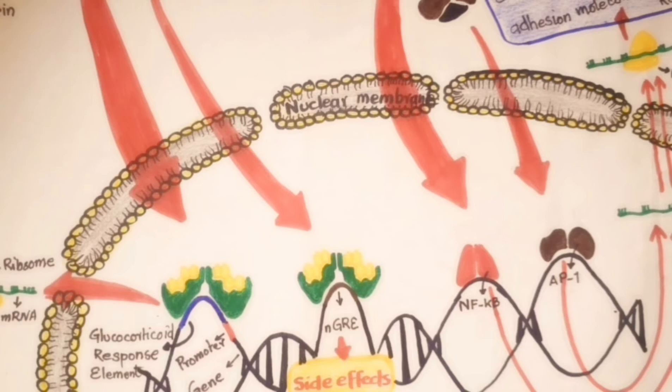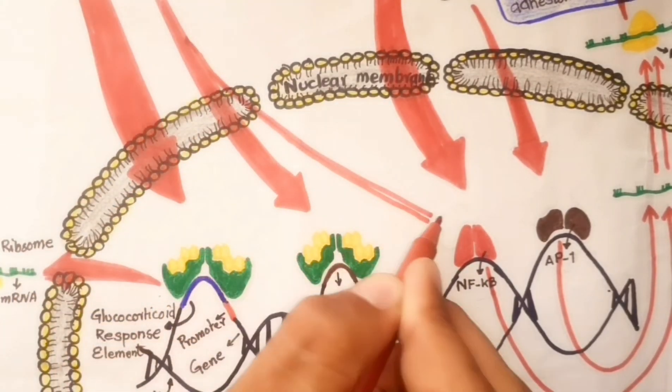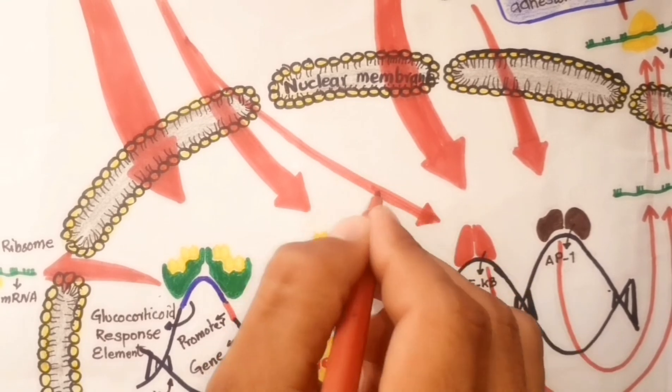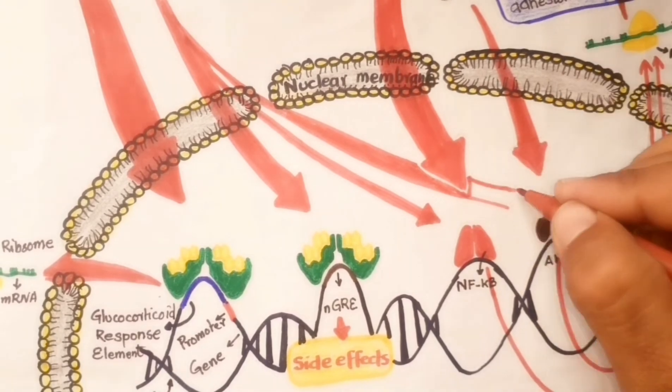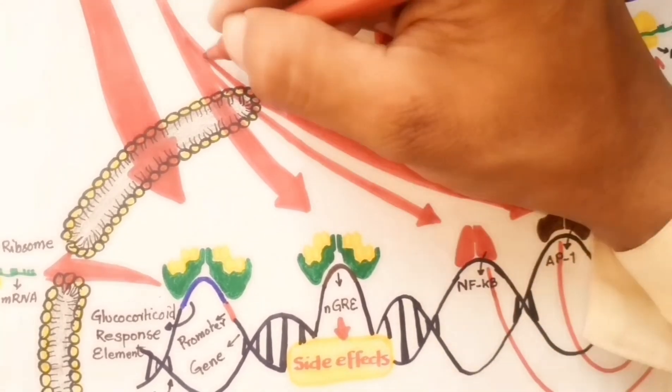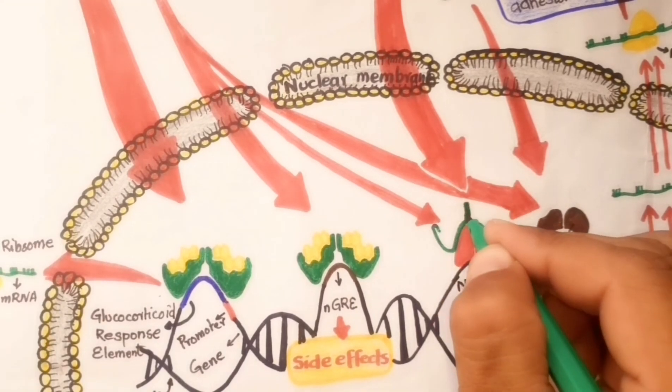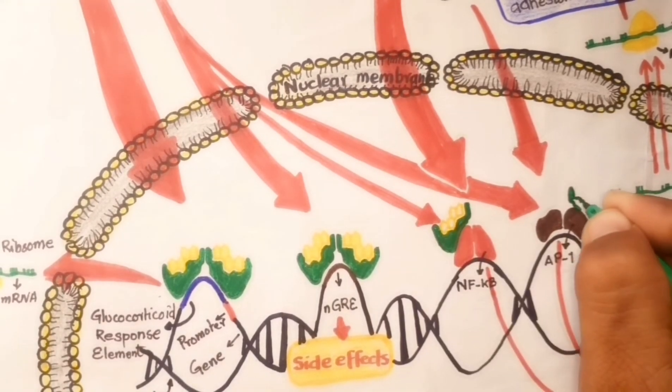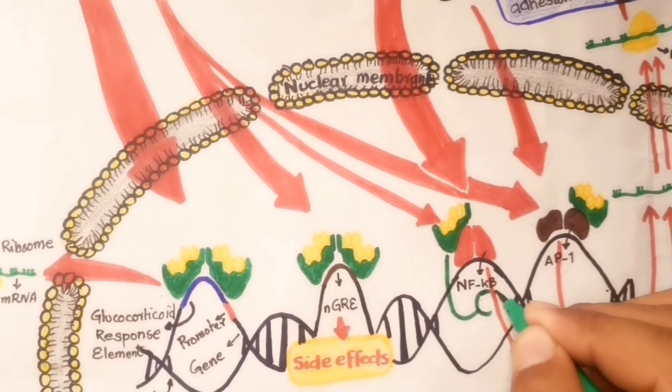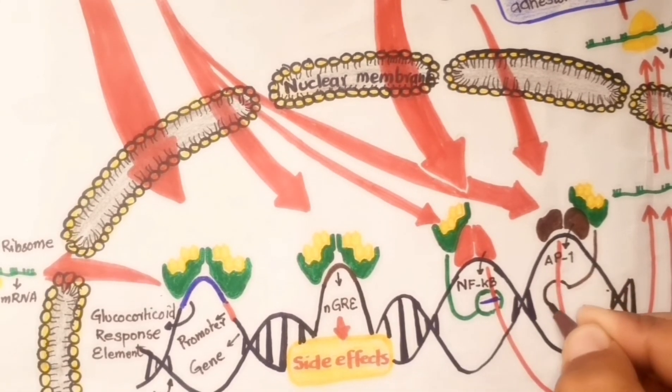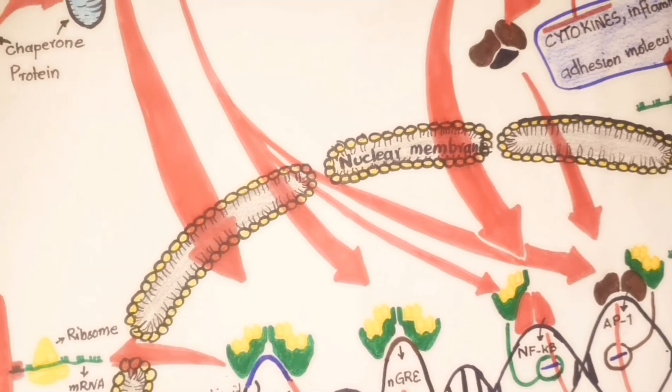Dexamethasone-activated glucocorticoid receptors interact functionally with the actions of nuclear factor kappa B and activated protein 1 without the necessity of binding to DNA—this is called the non-genomic effect of corticosteroids. These transcriptional factors are inhibited by activated glucocorticoid receptors through various mechanisms and block their transcriptional activities to make mRNAs and subsequently prevent inflammatory cytokine production.